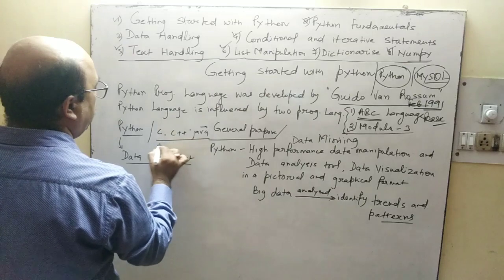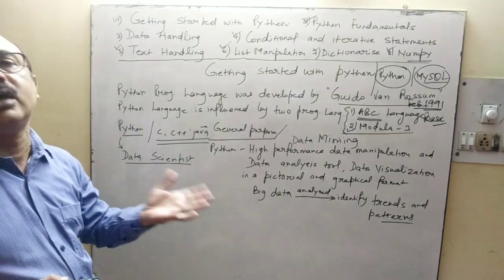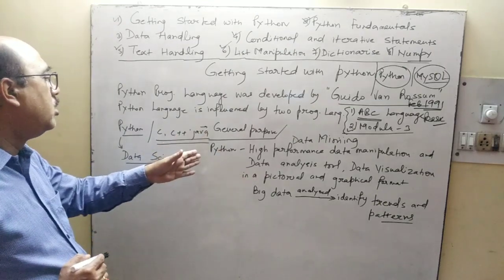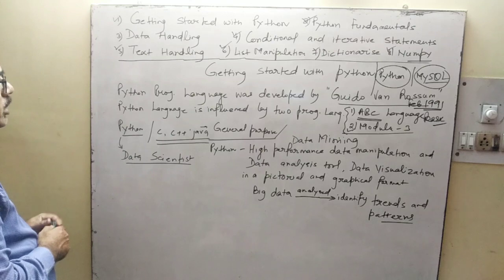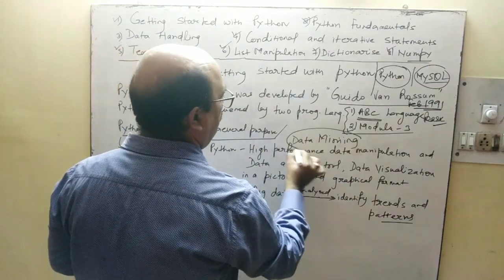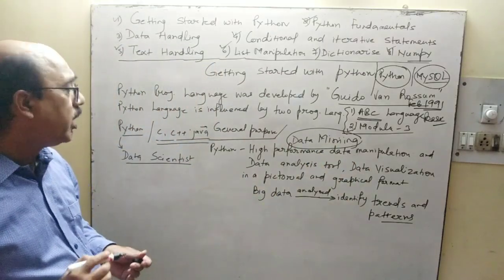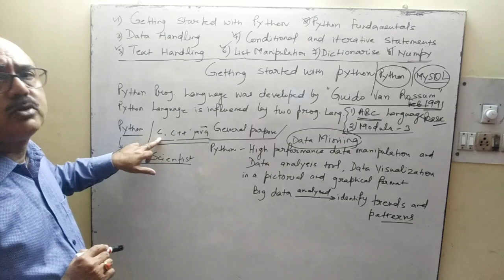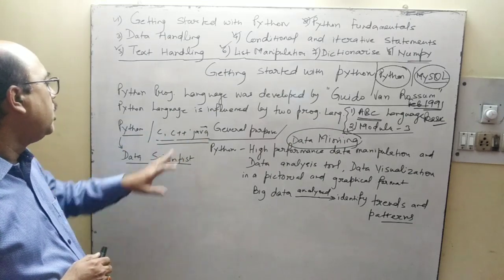C, C++, and Java are general-purpose languages which are object-oriented. C is procedural-oriented, C++ is object-oriented, and Java is especially an object-oriented language used for communication.